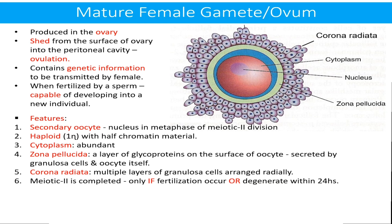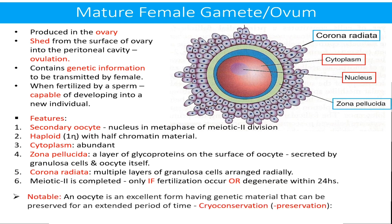The notable point is that the second meiotic division is completed only if fertilization occurs; otherwise this ovum degenerates within 24 hours. An oocyte is an excellent form having genetic material that can be preserved for an extended period of time, a process named cryoconservation or cryopreservation.